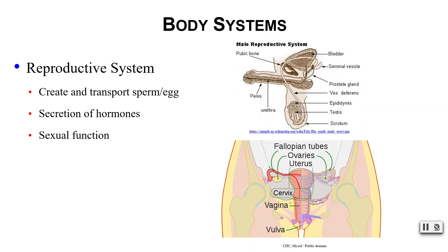Last but not least, we have our reproductive system. We can create and transport sperm and egg — those gametes. We also have secretion of hormones; most people are familiar with testosterone and estrogen. And we have sexual function as well.